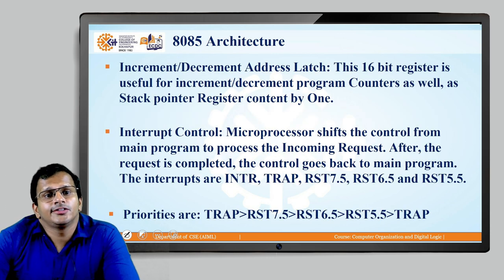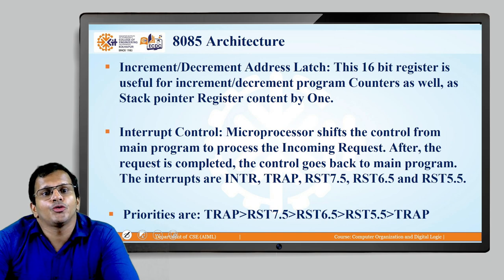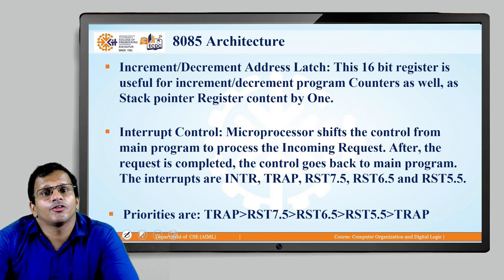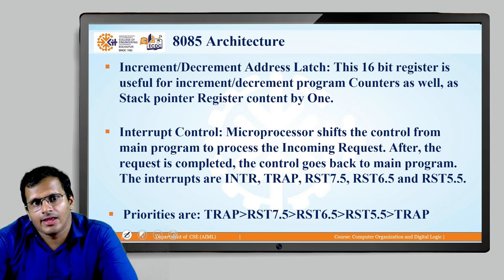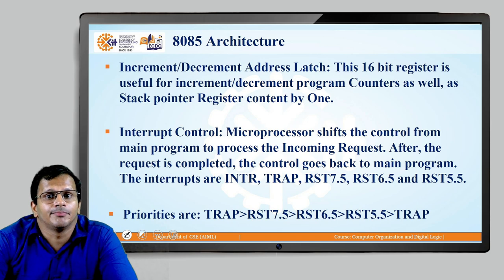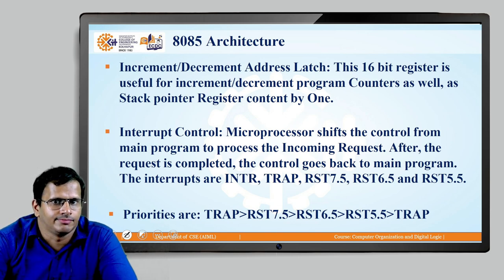The increment/decrement latch is used to increment or decrement the address line. With instructions like PUSH and POP, we have to increment or decrement the address pointer. We will understand the concept of the address latch increment and decrement when we look at those instructions. Interrupt priorities have been discussed: TRAP is given the maximum priority, followed by RST 7.5, RST 6.5, and RST 5.5 as lower priorities.